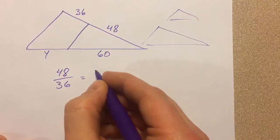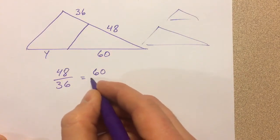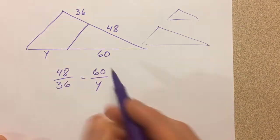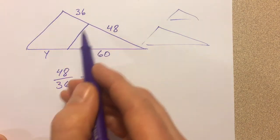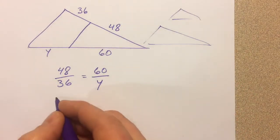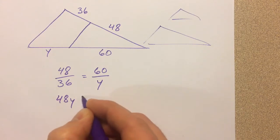So I'm comparing those two, and then I'm comparing the 60 to the y. So if I start with the 48, I better start with the 60. I could also put the 36 compared to the y and the 48 compared to the 60, but then we can cross multiply: 48 times y.